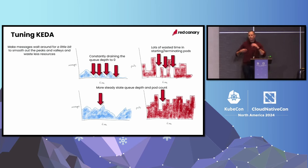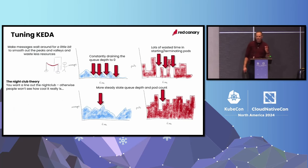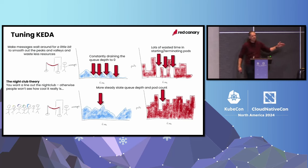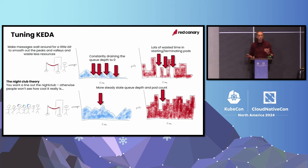We determined we should make our messages smooth out a little bit more, and we called this the nightclub theory. No one wants to go to a nightclub when there's no one out the back door — instead, you have to have that line out the door all the time, because then people see how cool that nightclub is, and people want to go to your pod and do processing. It's fun to tell people about the nightclub theory and watch them go, what are you talking about?